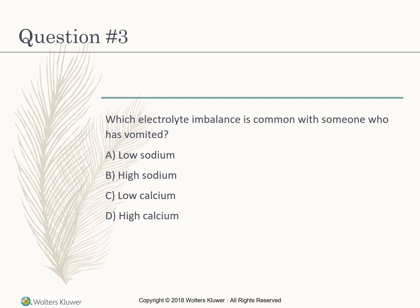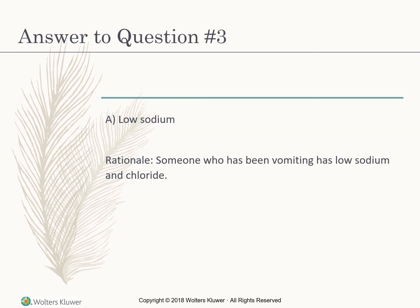Which electrolyte imbalance is common with someone who has vomited? Low sodium, high sodium, low calcium, or high calcium? The correct answer is low sodium, and usually low chloride as well. When volume is down because they vomited, your sodium and chloride will be down — when you lose water or fluids, sodium and chloride go out as well.